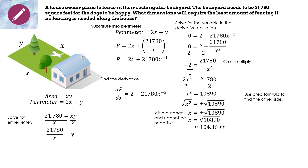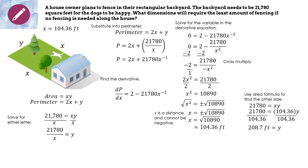We use the area formula to find the other side and solve for y. The area is 21,780 square feet and x is 104.36. Dividing both sides by 104.36 gives y approximately 208.7 feet. So the dimensions required are about 104.36 feet for the two sides and approximately 208.7 feet for y. When we drew the picture we weren't sure which side would be larger, but the important thing is that we have the picture and understand what we're doing.